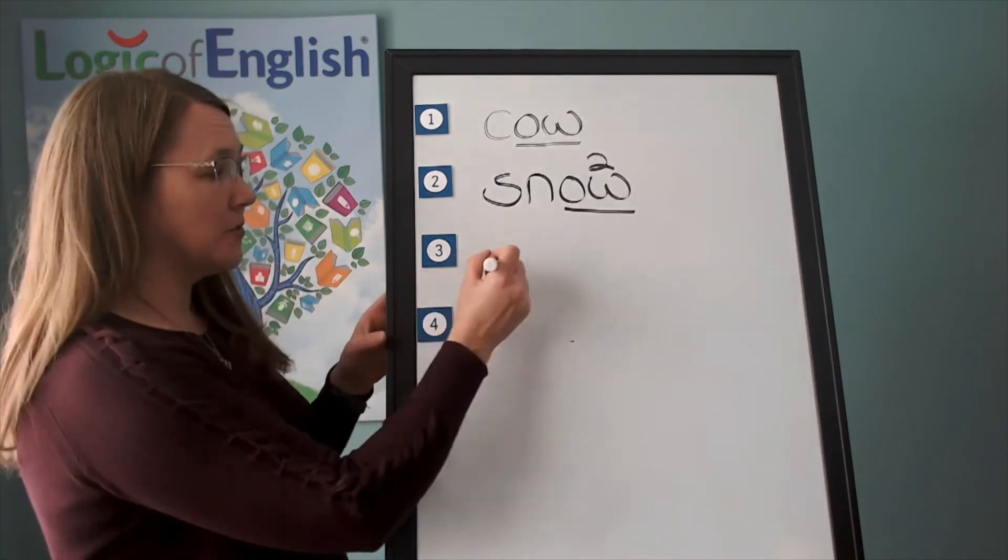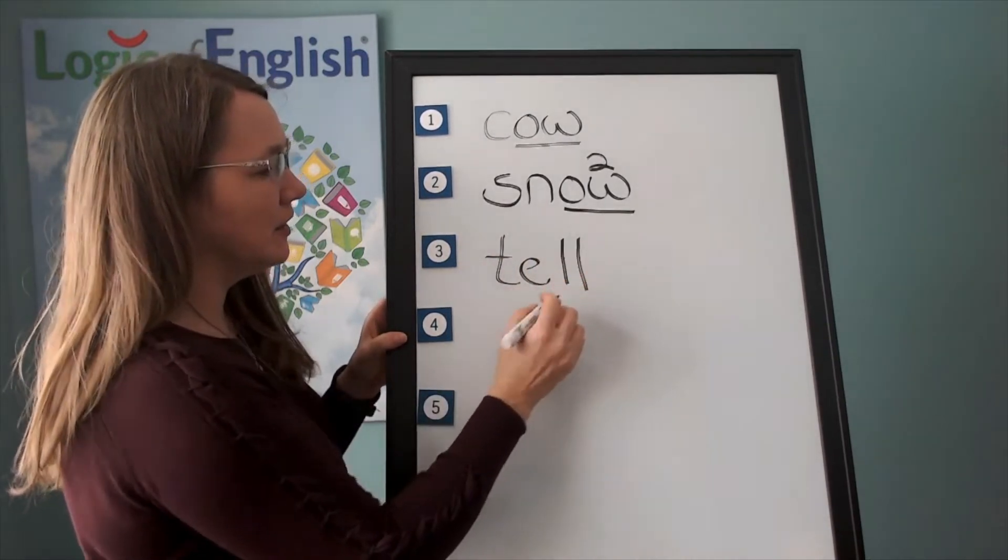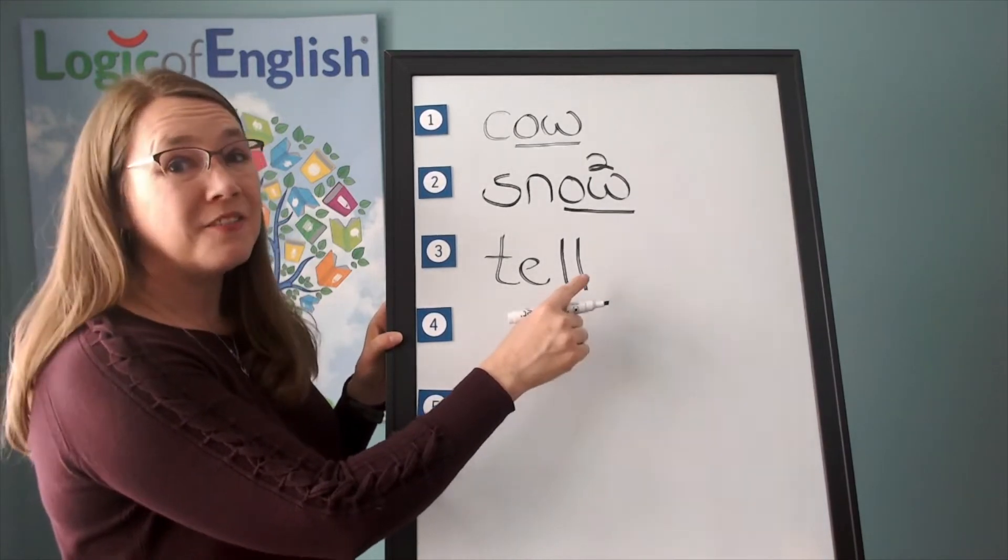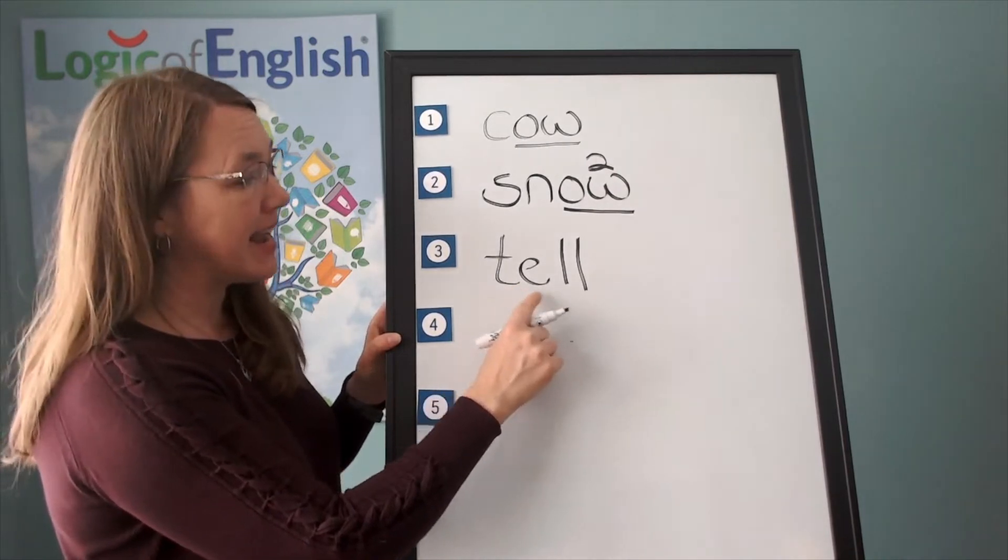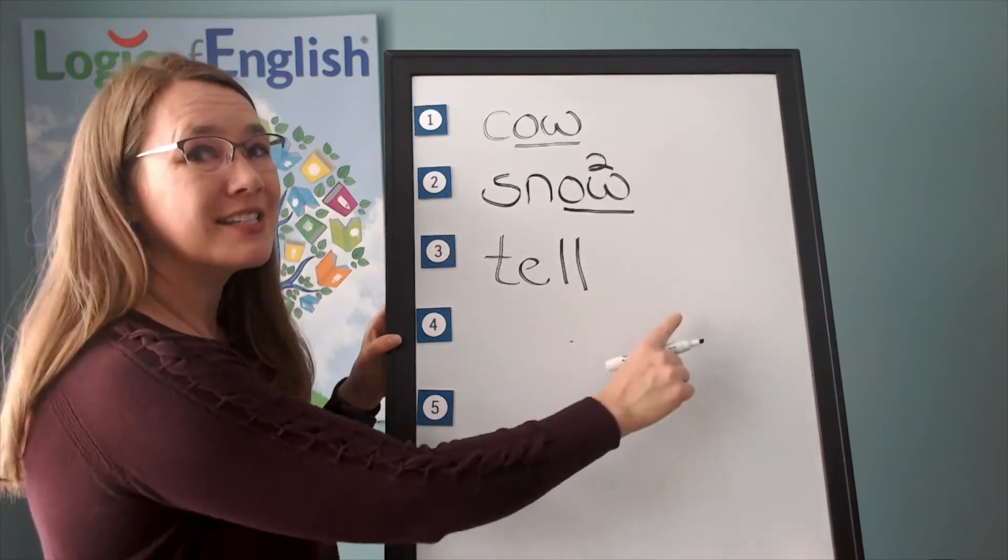Very good. Now help me to write it. T-e-l-l. Why did we double the l or the l? We often double F-l or S after a single vowel at the end of a base word. Let's sound it out. T-e-l-l. Tell.